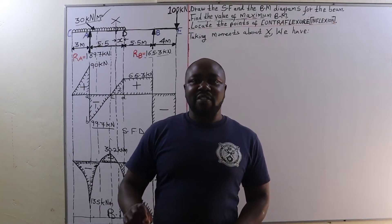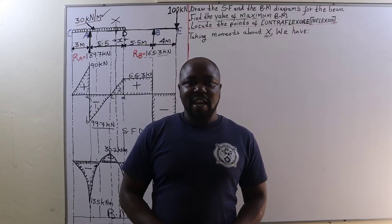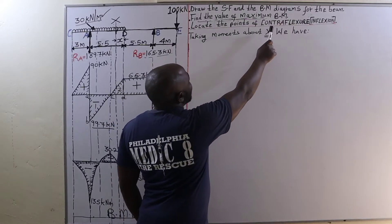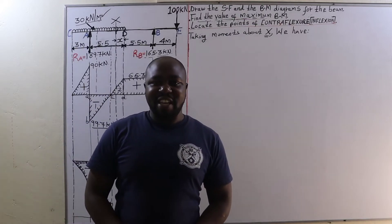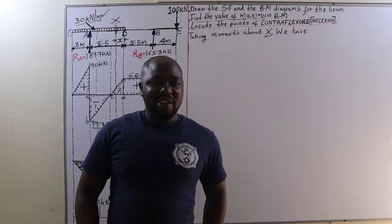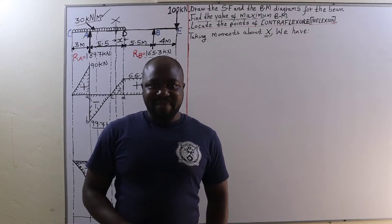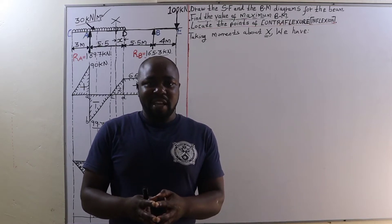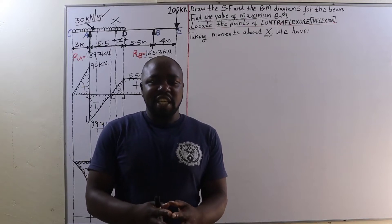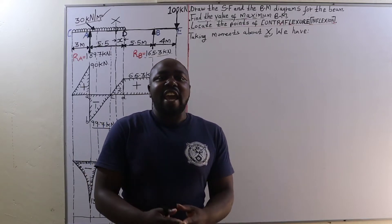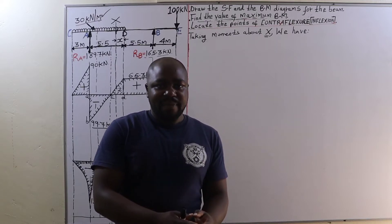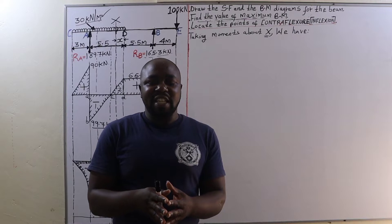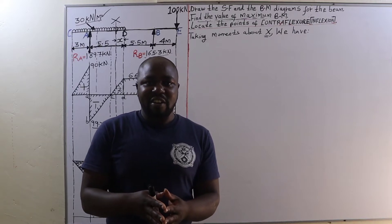Today we are going to solve the final question about the beam, which is locating the points of contra flexure, or the points of inflection. A point of contra flexure is a point whereby the bending moment changes sign as well as curvature, and at that point the bending moment is zero.